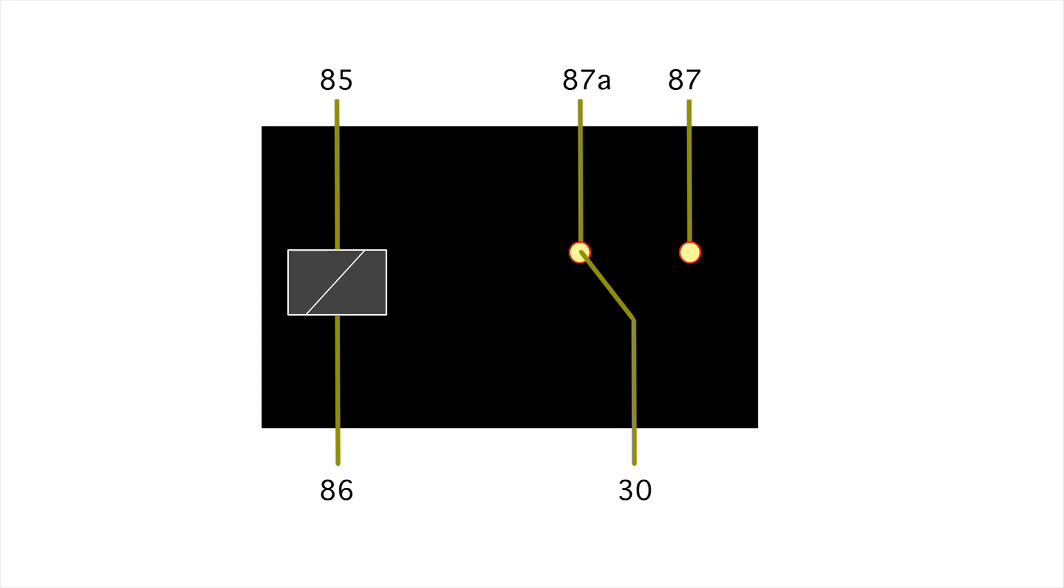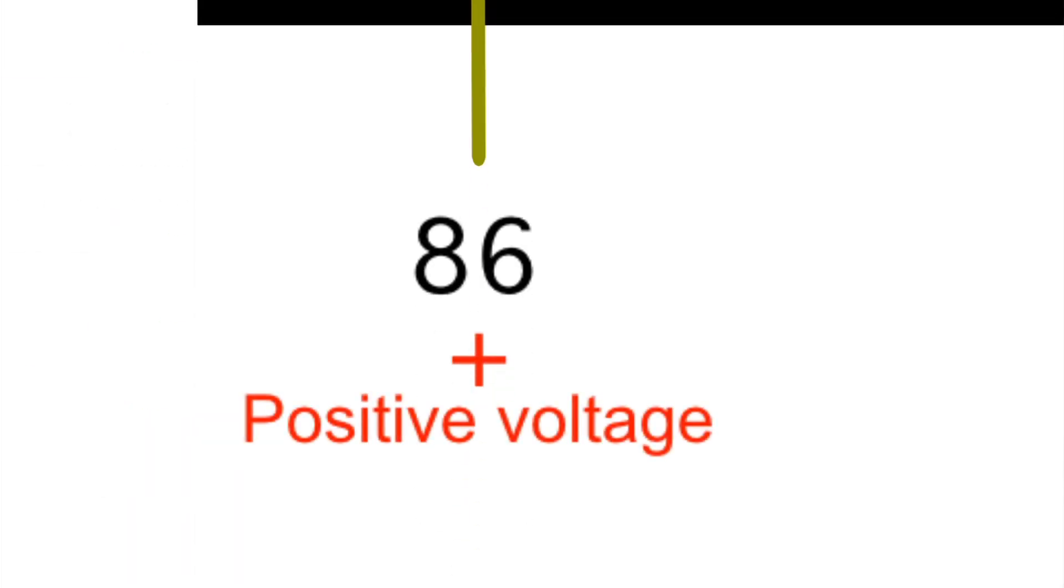The 85 terminal is usually where we supply ground to the relay or a negative voltage.